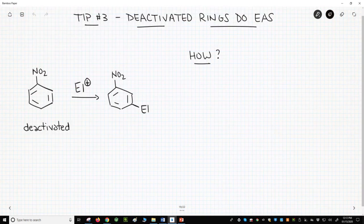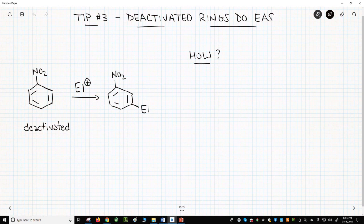Tip number three. Even deactivated rings can do an electrophilic aromatic substitution. The more deactivated a ring is, the more difficult the reaction will be. So we're going to need stronger reagents. We might need a higher reaction temperature.